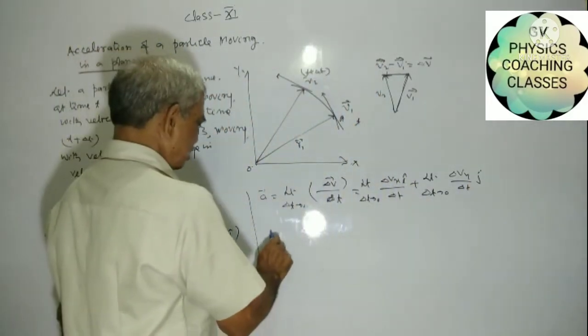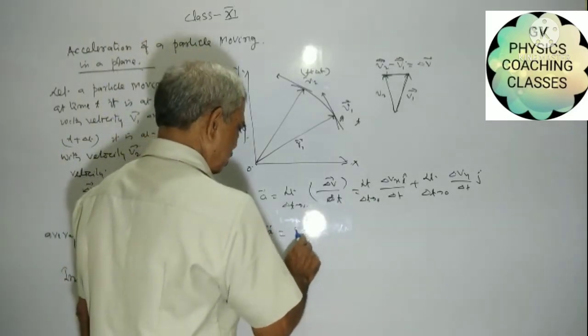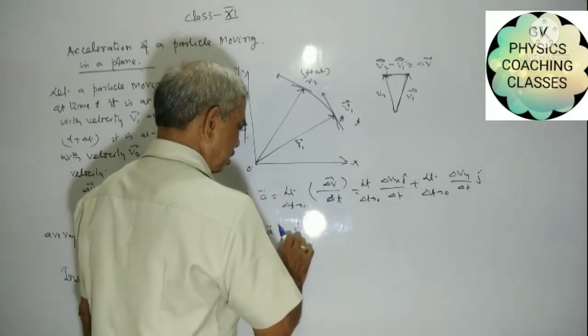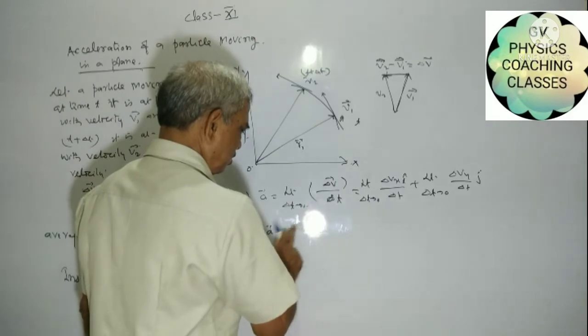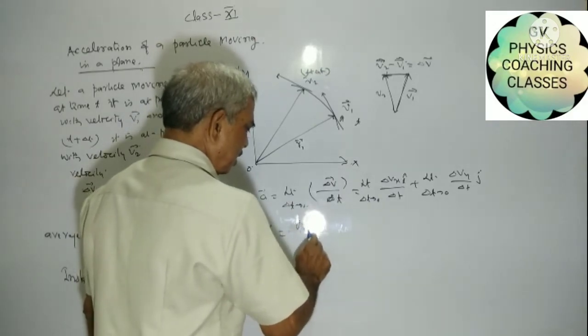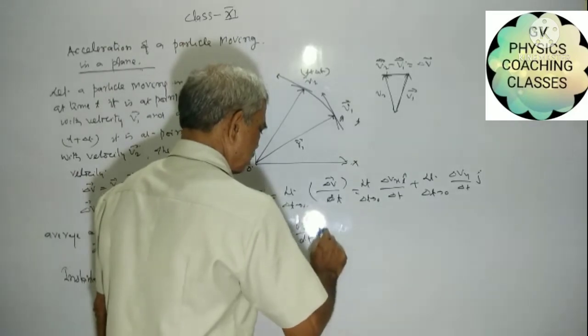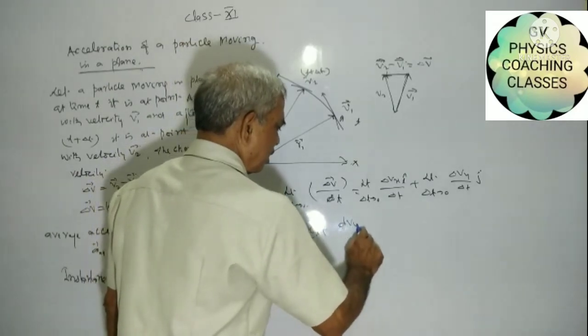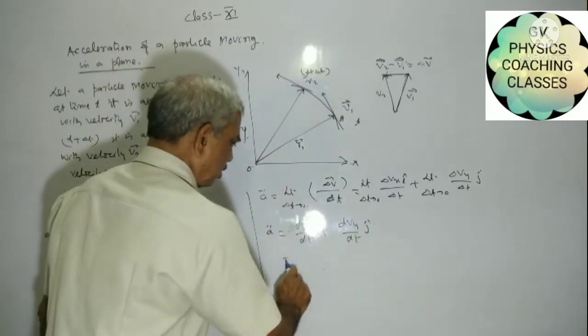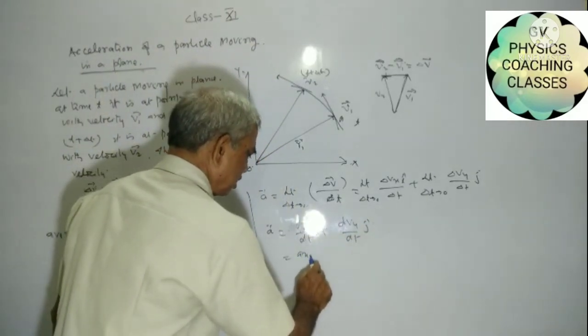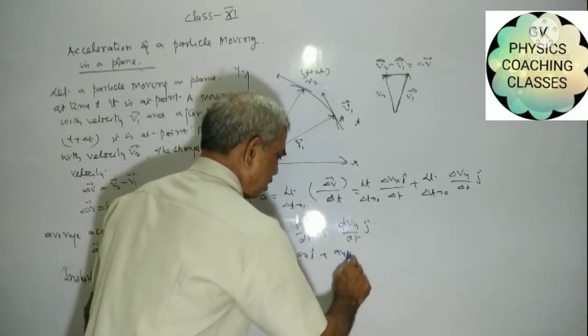We can write it as dVx upon dt i cap plus dVy upon dt j cap. Or it is Ax i cap plus Ay j cap.